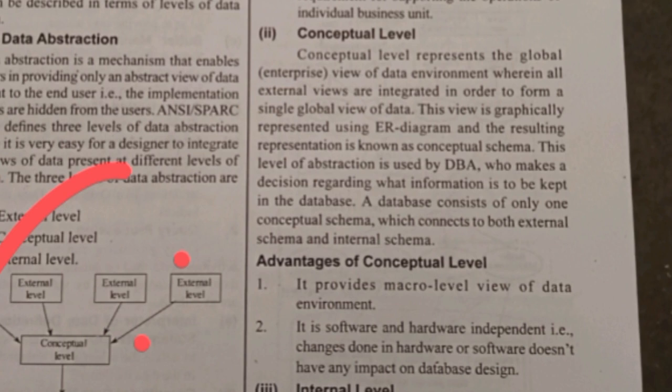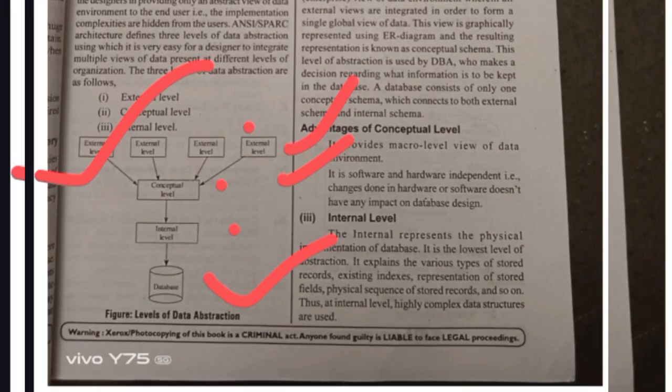The next one is conceptual level. Conceptual level represents the global view of the data environment. For example, in a college database, the principal can access student data, faculty data, and management data. Faculty can access only student data and their own data. Students have no access to see any data except their own. The advantage is it provides a macro-level view of the data environment, and it is software and hardware independent.